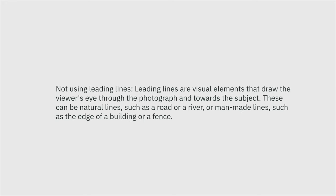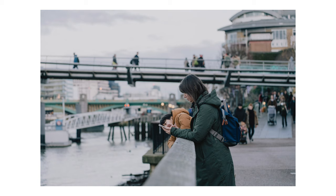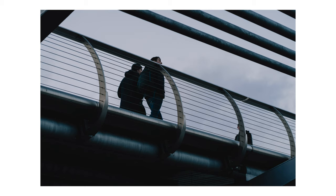Mistake number nine: not using leading lines. Leading lines are visual elements that draw the viewer's eye through the photograph toward the subject — these can be natural lines like a road or river, or man-made lines like the edge of a building or a fence. I use leading lines all the time, especially in street photography. This railing in one of my shots was a simple way to guide the viewer's eye to the subject. The best way to practice this is through experimentation.